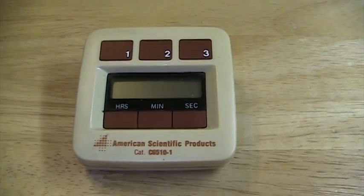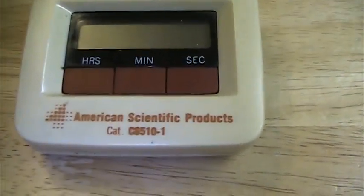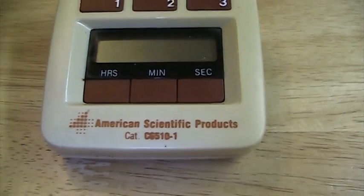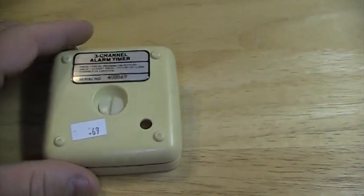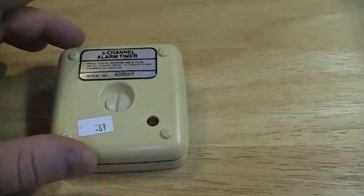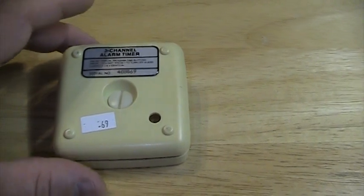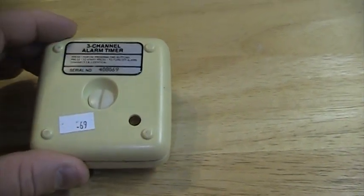This is an American Scientific Products Catalog Number C6510-1 Electronic Digital Timer, which I recently picked up at an area thrift store for a whopping 69 cents. Now you have to be careful when you start throwing around money like that because people are bound to think that you're some kind of high roller.